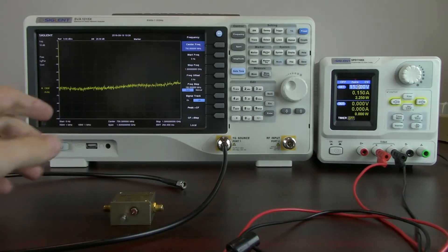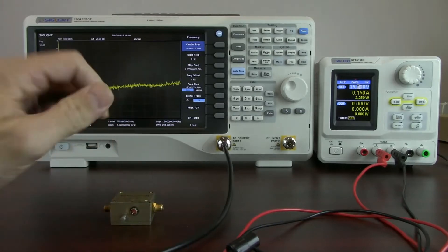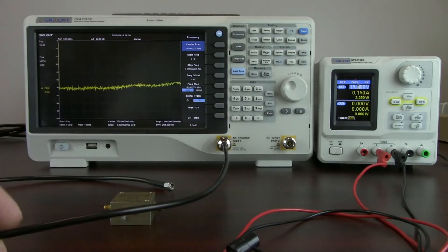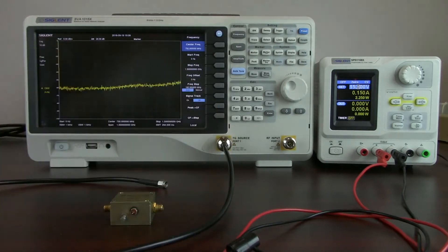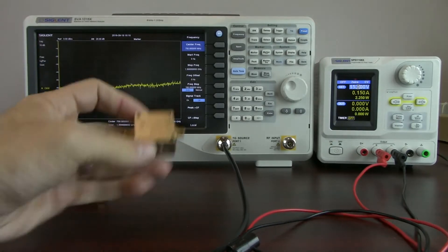So, the first thing that we're going to do is we have an SMA to N type connector here on the tracking generator source output. So the tracking generator source is going to source a particular frequency or range of frequencies.